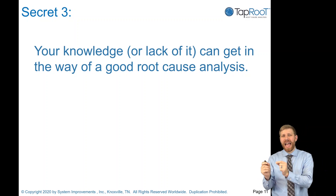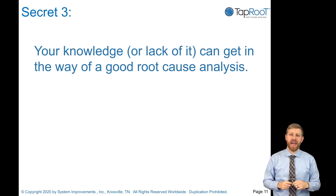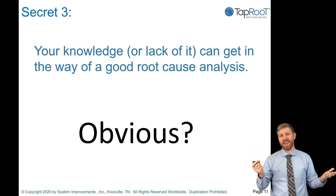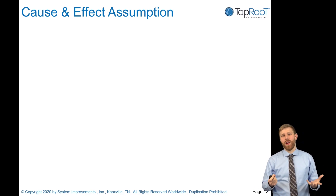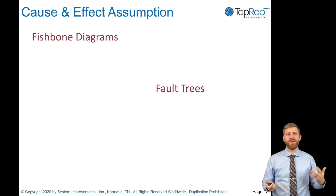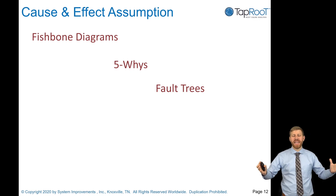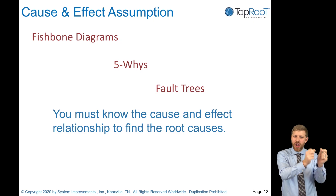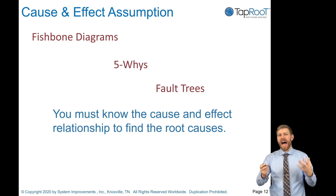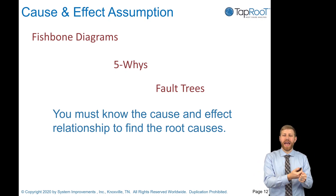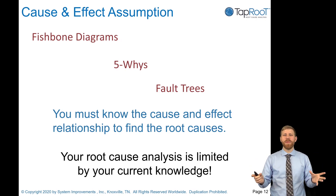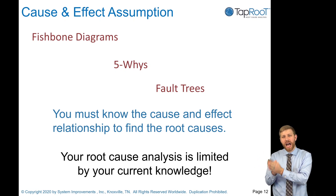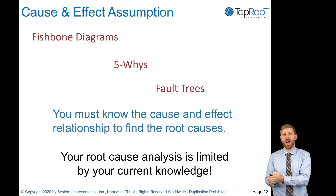Secret number three: your knowledge, or lack of it, can get in the way of good root cause analysis. There are cause-and-effect assumptions that go into root cause analysis, and techniques like fault trees, fishbone diagrams, and five whys are about organizing what you know into formats to break down information. Your root cause analysis is limited by your current knowledge. If you're not an expert, you're never going to get down to root cause because you won't know what questions to ask. You'll stay very surface level.